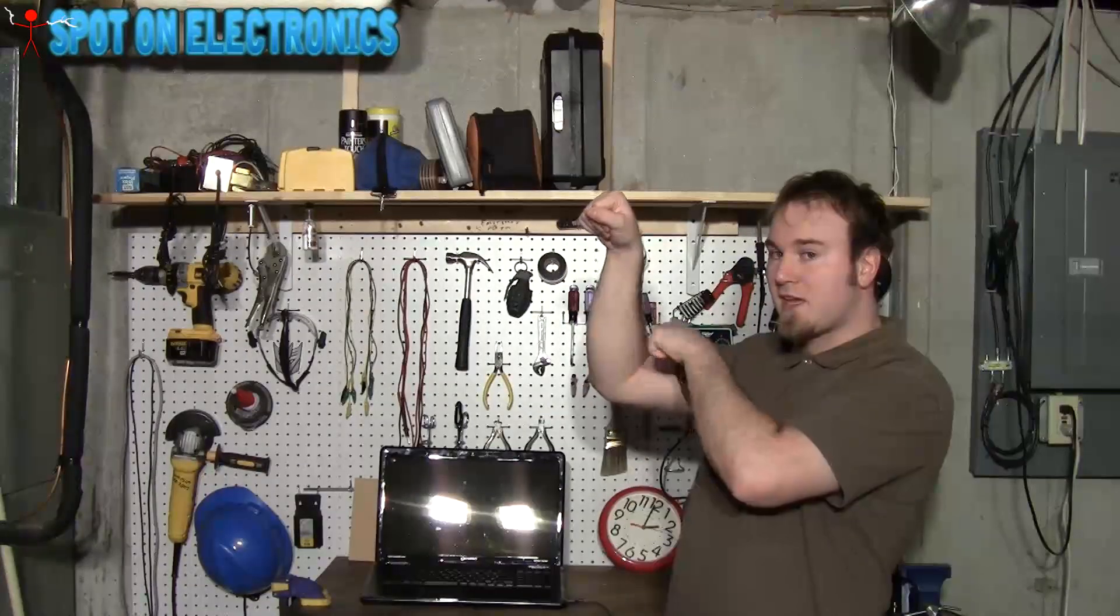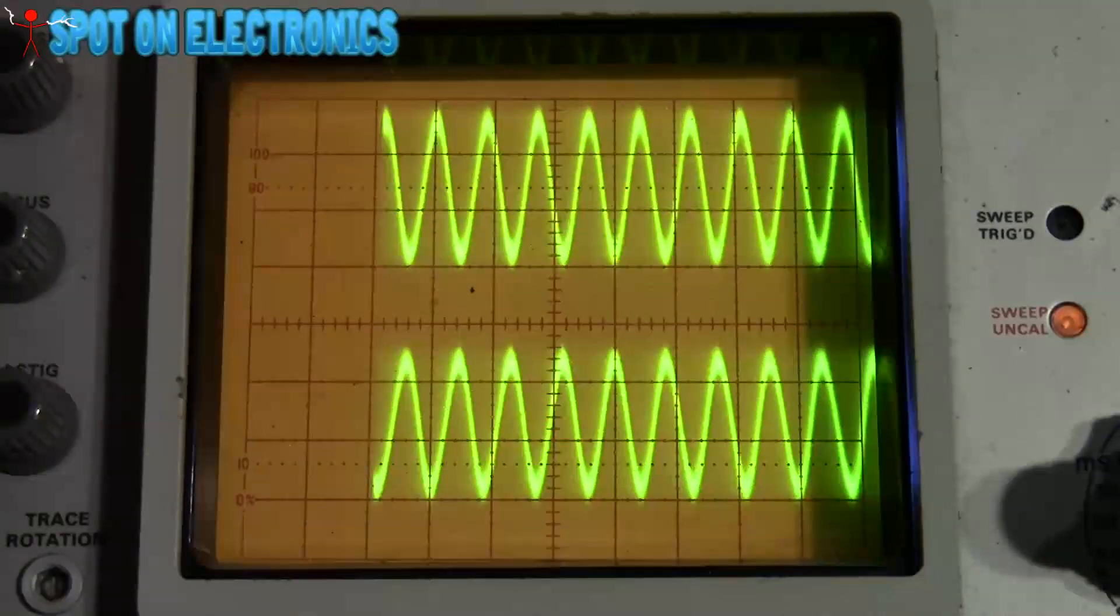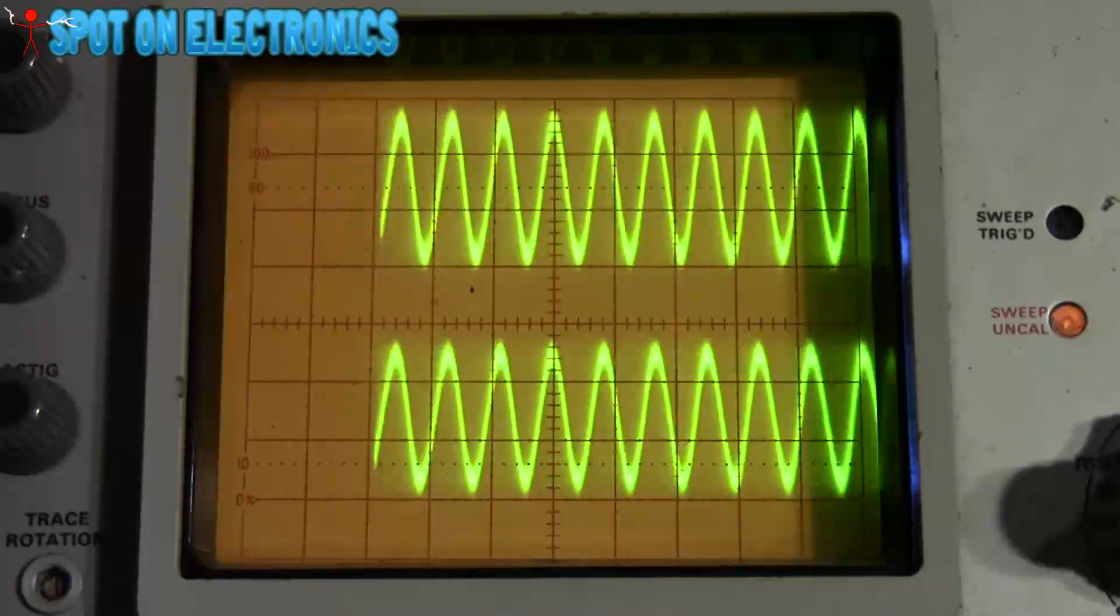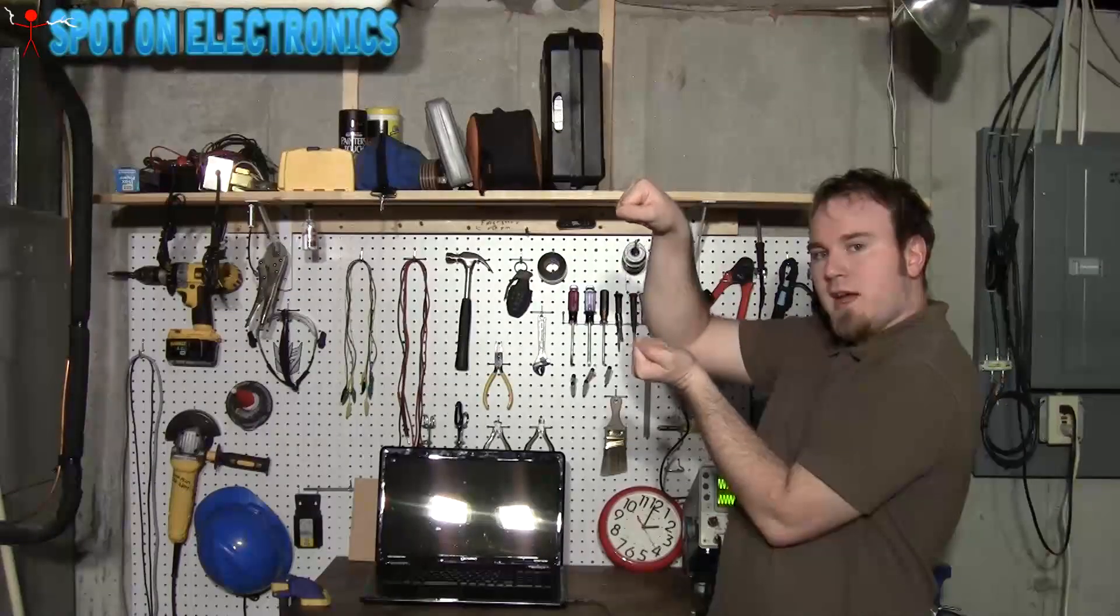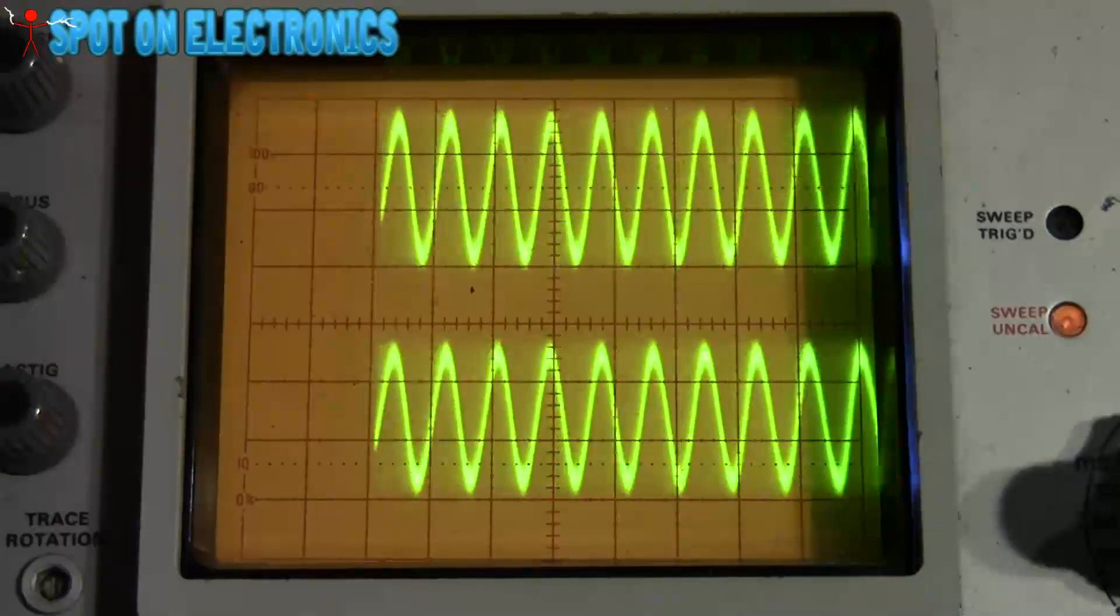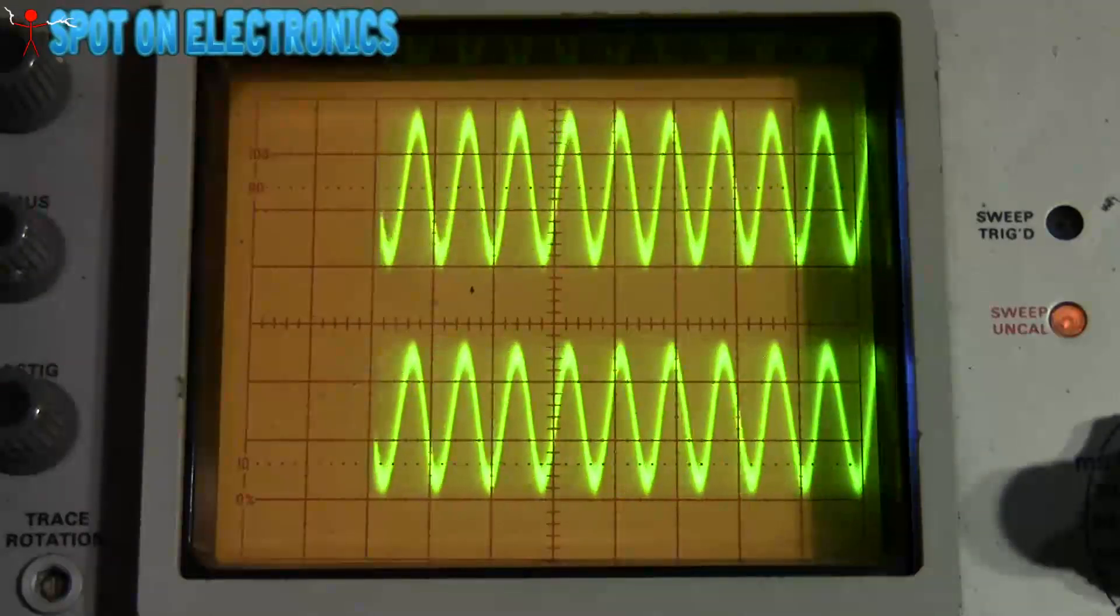ground, negative being inverse. It takes the positive signal, the negative signal, and swaps the negative signal so now it's inverted again. So now you have two waves that are alike - your positive and negative, now they are alike.